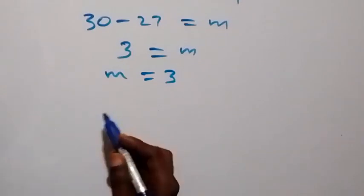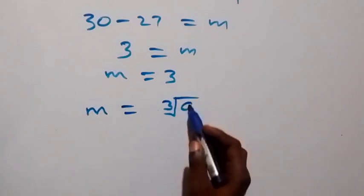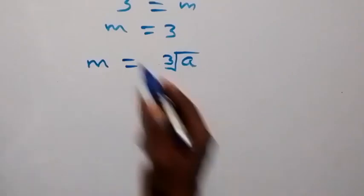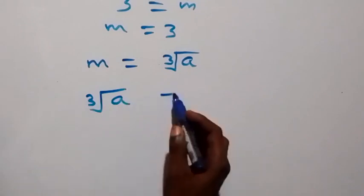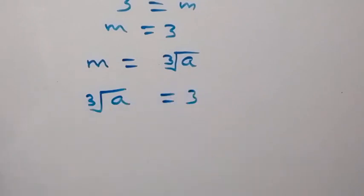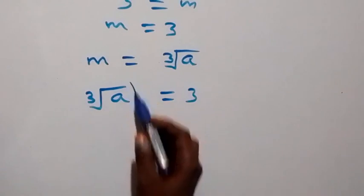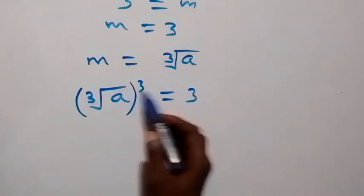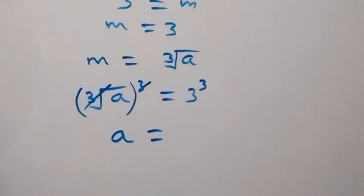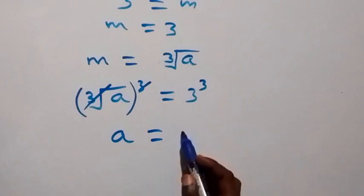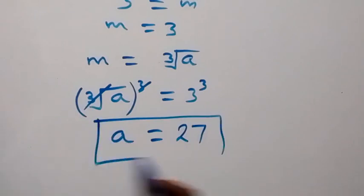30 minus 27 gives us 3, so m equals 3. Recalling that we let m equal the k-th root of a, we equate and say k-th root of a equals 3. To find a, we raise both sides to the power of 3 — this cancels the k-th root and leaves a equals 3 raised to power 3, which is 27. So a equals 27.